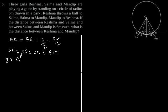Now, in triangle OAR by Pythagoras theorem, OA square plus AR square is equal to OR square.